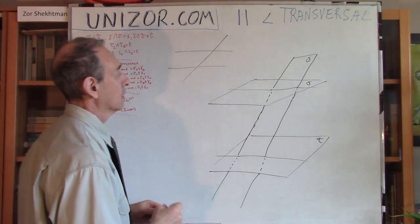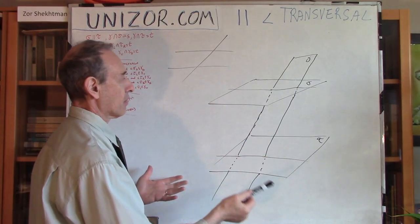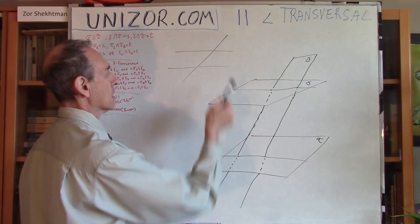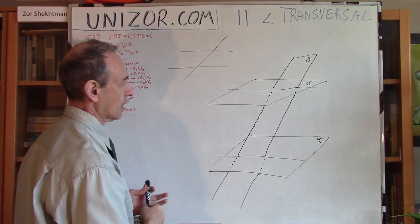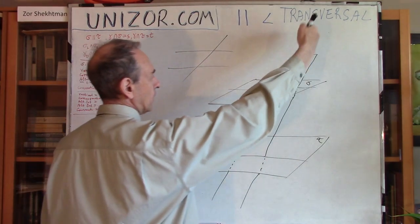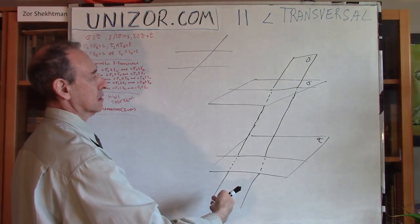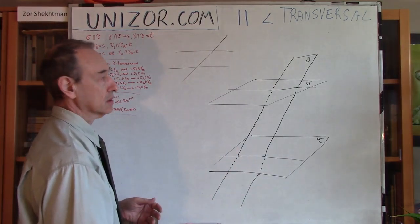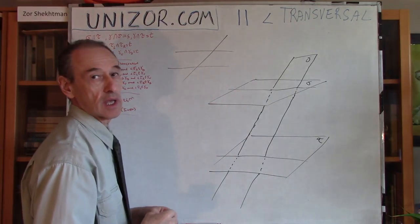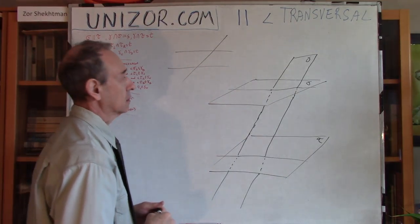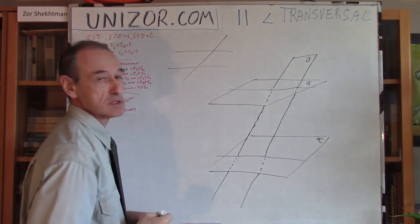I'm going to define all of these very similarly to the plane geometry situation when you have two parallel lines and a line which intersects them. The terminology is identical: the parallel planes correspond to parallel lines in plane geometry, and the plane which intersects both is called a transversal.